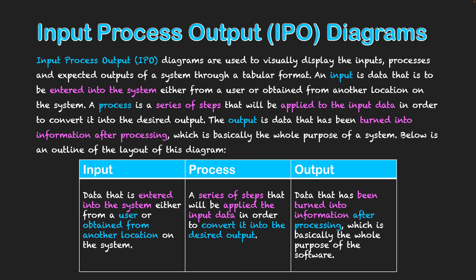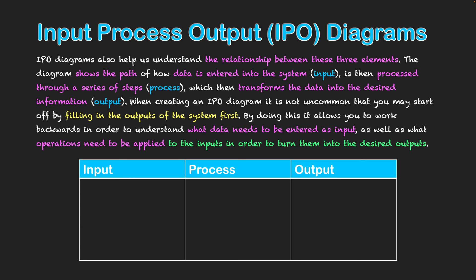Building upon this, IPO diagrams also help us understand the relationship between these three elements. The diagram shows the path of data entered into the system as input, how it's going to be processed in the process column, and what it's actually transformed into to make it the desired information — the output of the system. So we're seeing a flow through the diagram, which gives us a bit of an algorithmic mindset in planning the relationship between our input, processes, and outputs.